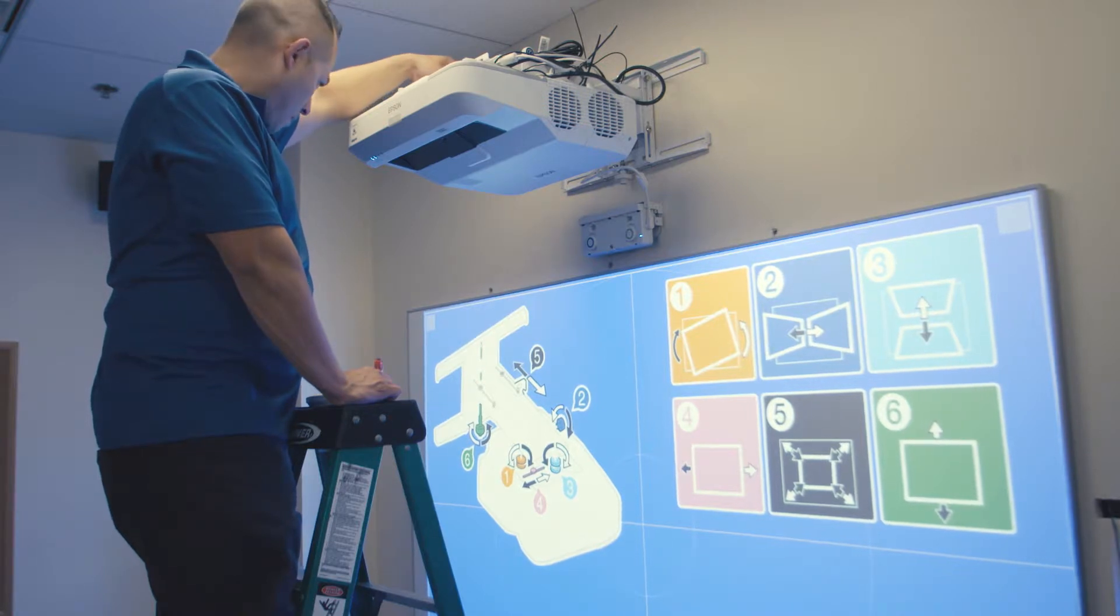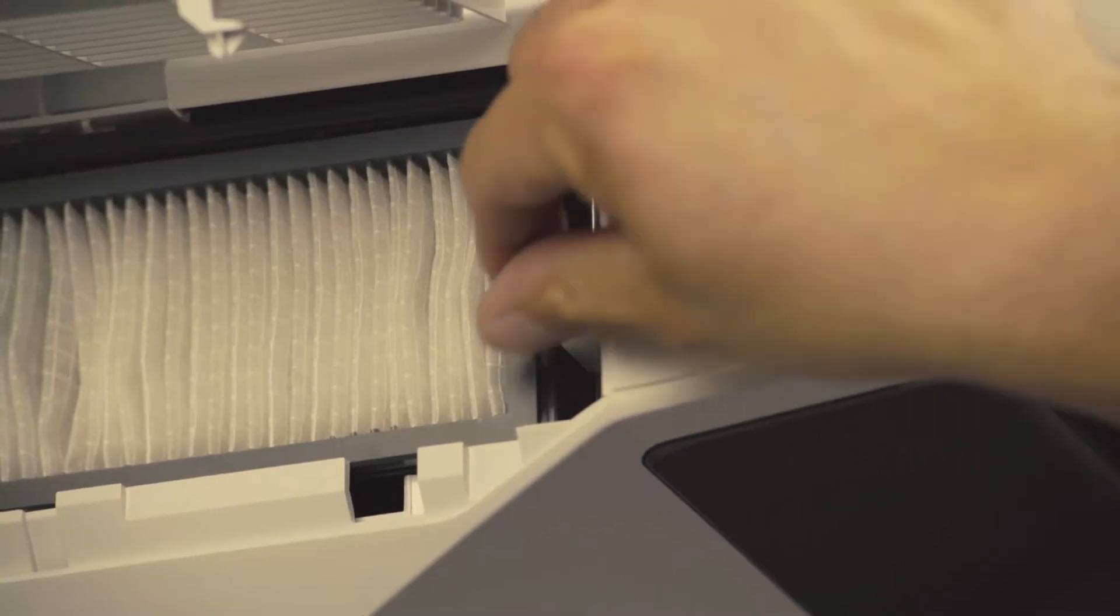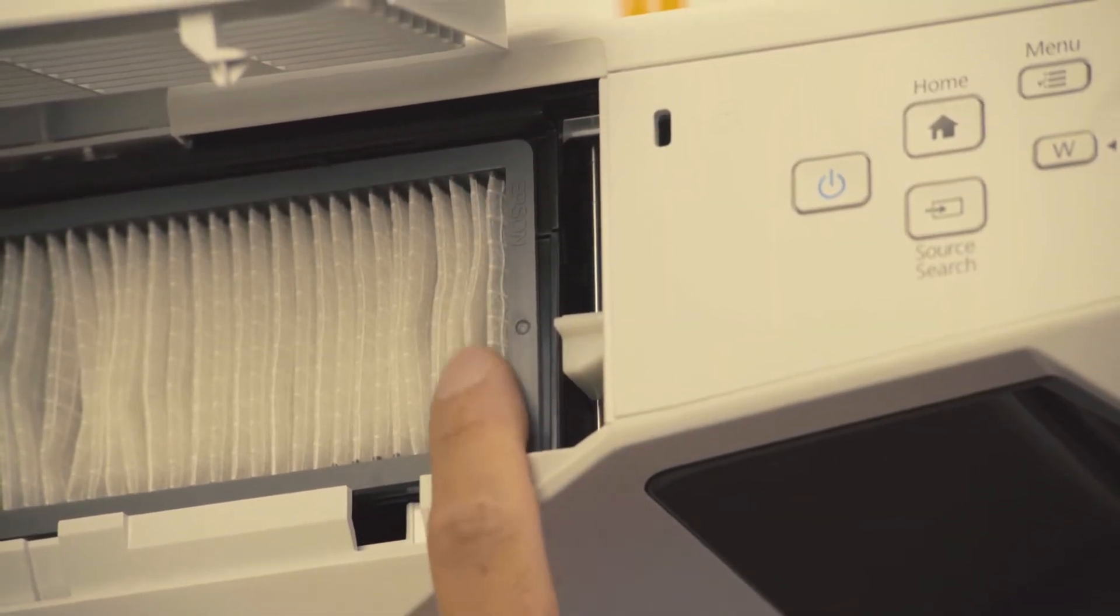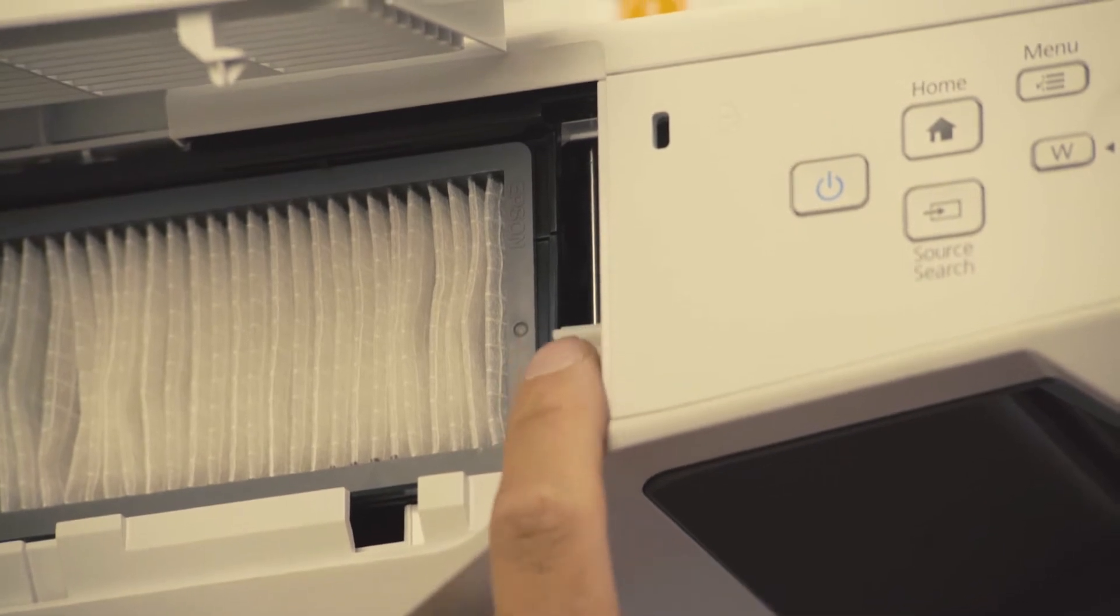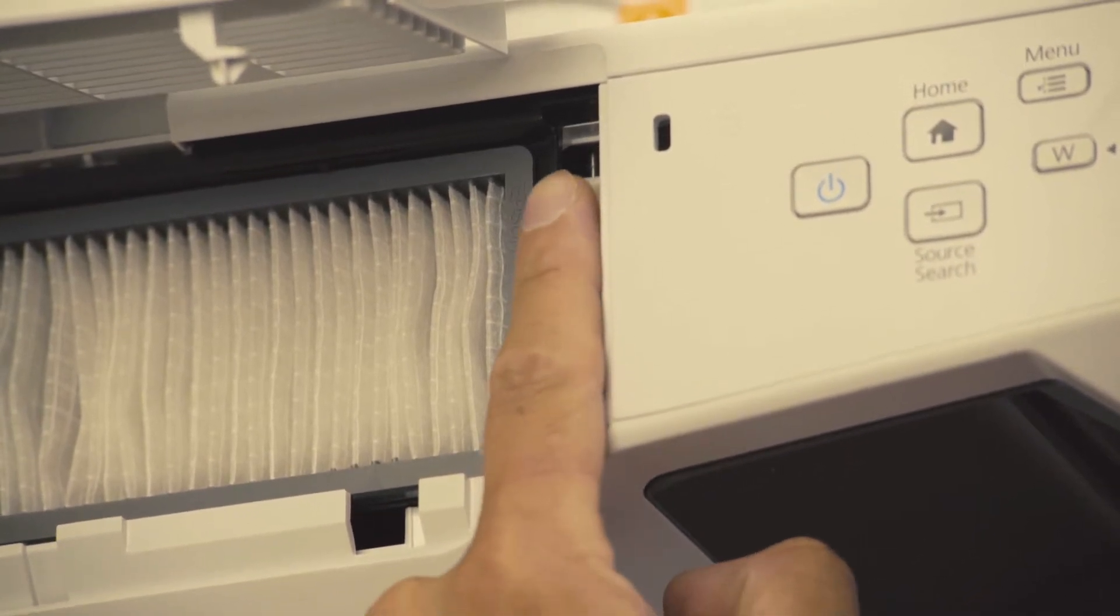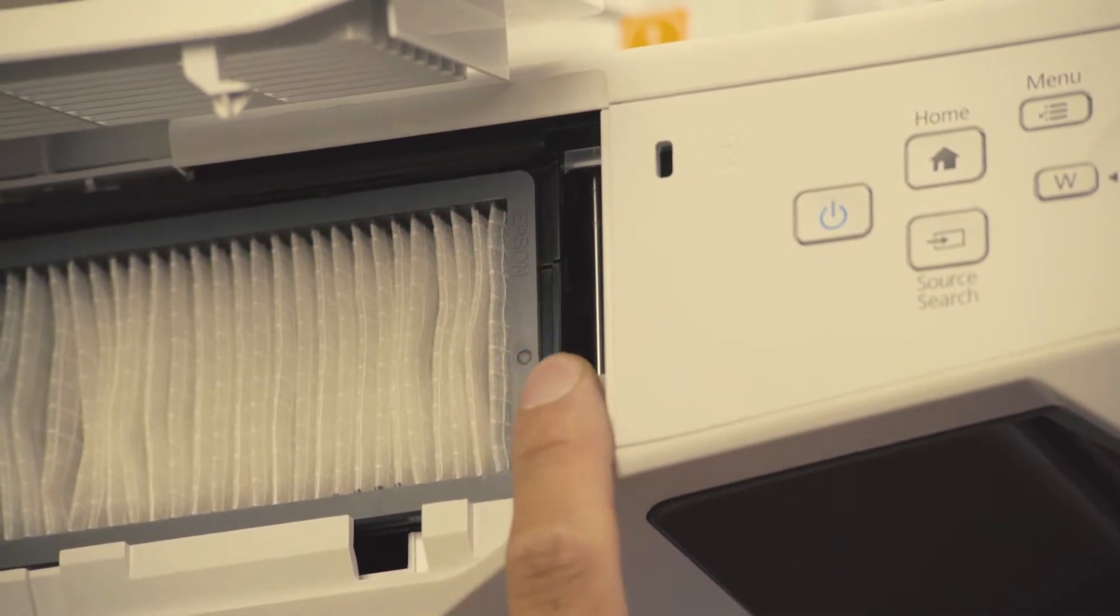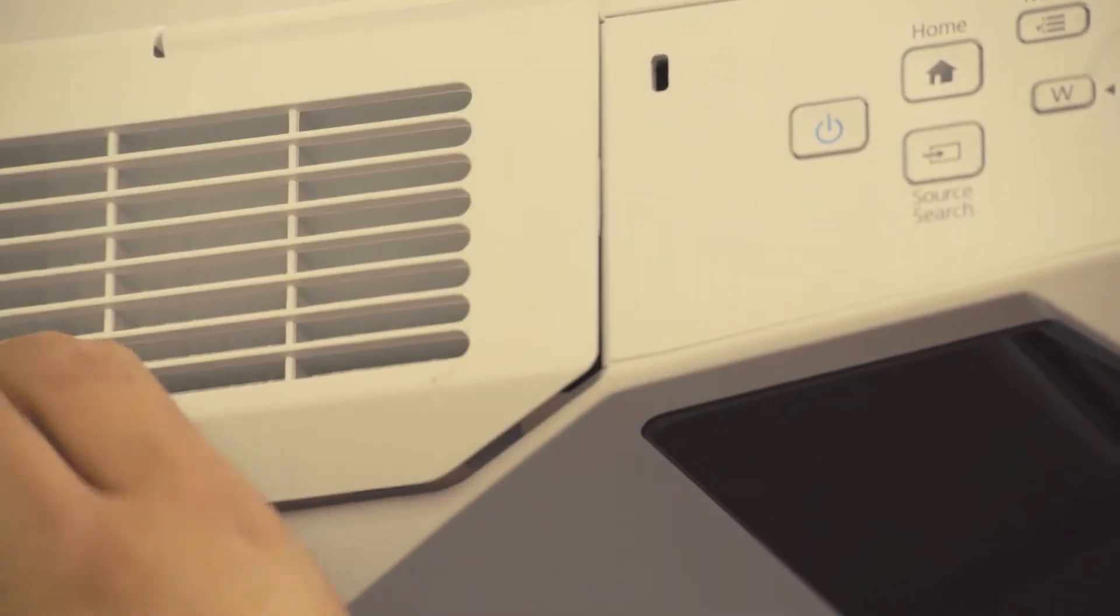Before doing so, you may need to adjust the projector focus so that you can read the instructions clearly. To adjust the focus, open the latch on the side of the projector where air filters are found and adjust the focus lever by sliding it up or down until the image is in focus, then close the latch again.